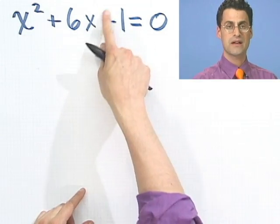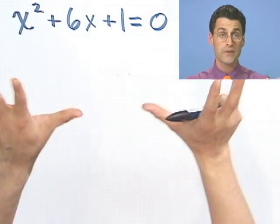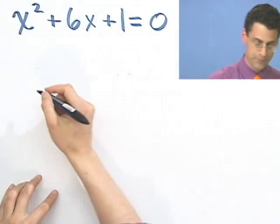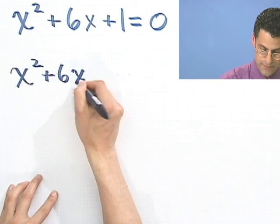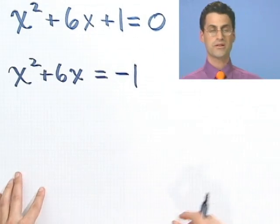Here is the method for completing the square. Step one: move any constant — any number without an x — to the right-hand side. I know this doesn't feel right, because you always want things equal to zero so you can factor. But we tried factoring and it failed, so let's move on. To complete the square, I'm going to take the constant and move it to the other side — so move all constants over to the right-hand side. Now it looks like x squared plus 6x equals negative 1.